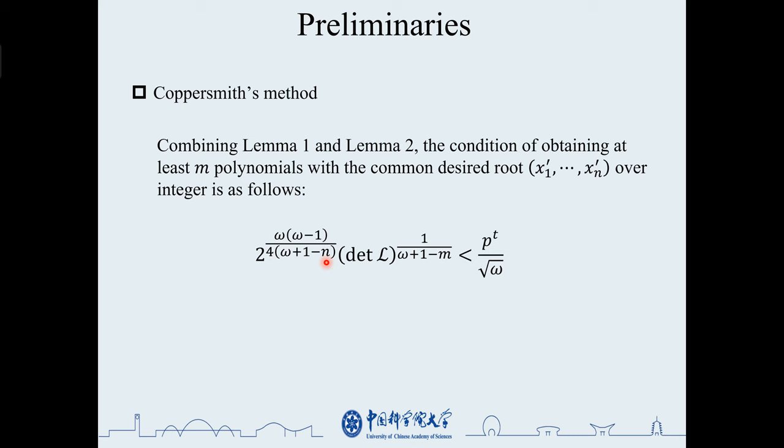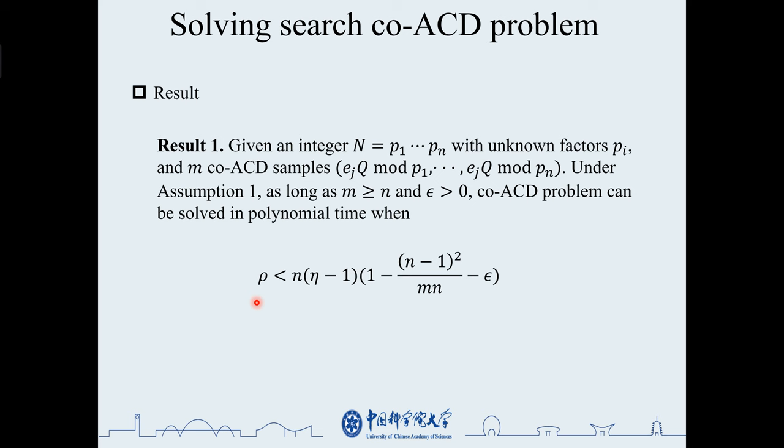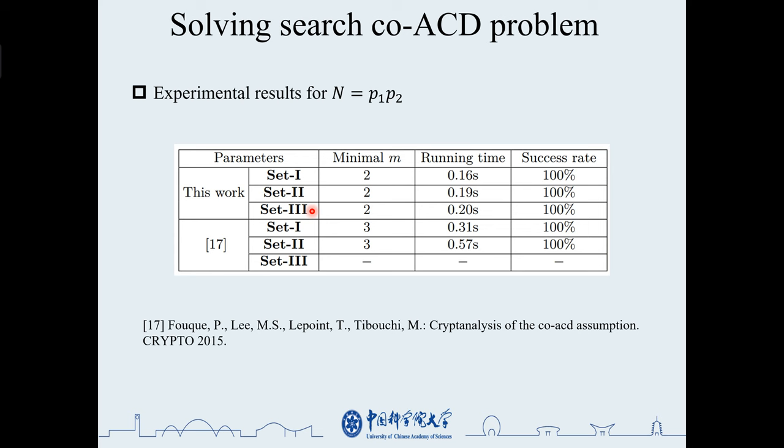In the following section, we will describe the specific method to solve the co-ACD search problem. The result we get is when rho satisfies this condition and m is greater than or equal to n, we can solve the search co-ACD problem. Theoretically, we give experiment results when n equals 2, which can successfully solve the problem with only two samples, less than previous work.